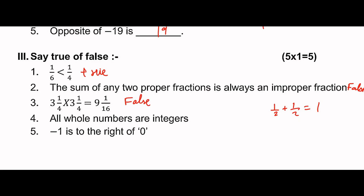All whole numbers are integers - that is true. Minus 1 is to the right of 0 - but minus 1 is actually to the left of 0 on the number line. So that statement is false.